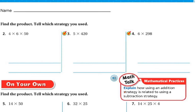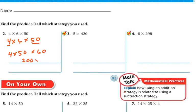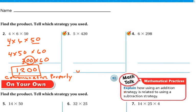For these next problems, solve and tell which strategy you used — commutative property, addition, friendly numbers, halving and doubling, or associative property. For the first one, 4 times 6 times 50, I'll use the commutative property to put easy numbers together. I switch to 4 times 50 times 6. 4 times 50 is 200 in my head, and then 200 times 6: 2 times 6 is 12, plus two zeros is 1,200. Strategy used: commutative property.